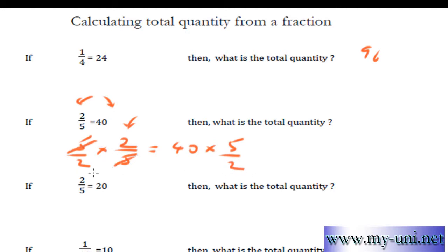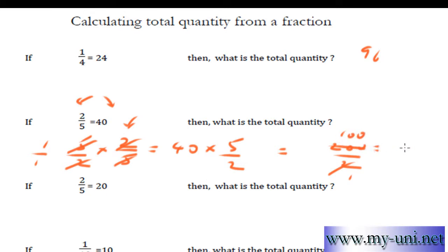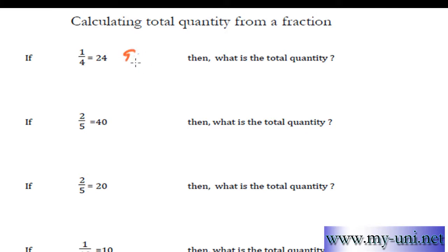So these 2s will cancel out and these 5s will cancel out. This side of the equation is now 1 over 1, or just simply 1. So 40 times 5 is equal to 200, and then divided by 2: 2 times 100 is 200, so 1 over 1 is equal to 100 over 1, or the whole quantity is equal to 100. The first answer was 96, this one is 100.